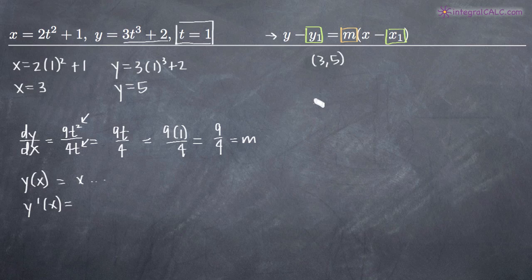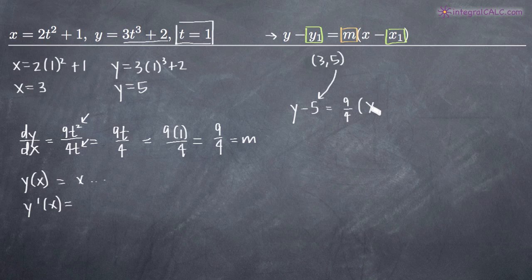Now that we have m and our coordinate point (3, 5), we can find the equation of the tangent line. We'll write y minus 5 equals 9 fourths times (x minus 3). We could leave the equation of the tangent line in this point-slope form, but it's probably best to simplify.